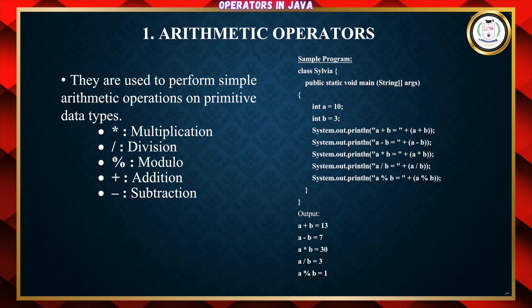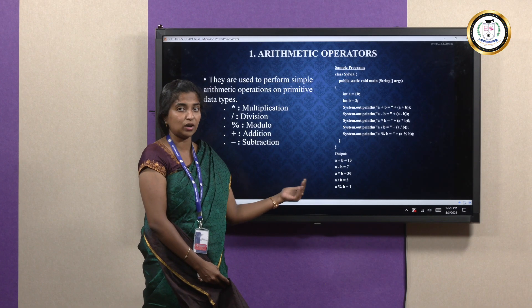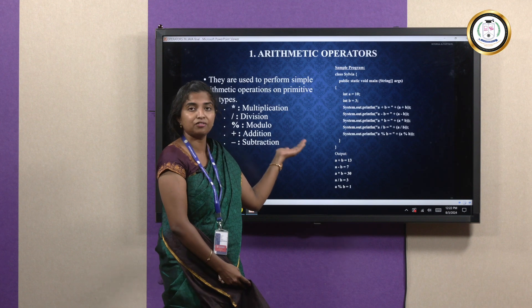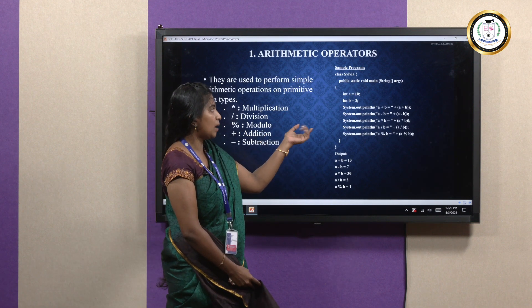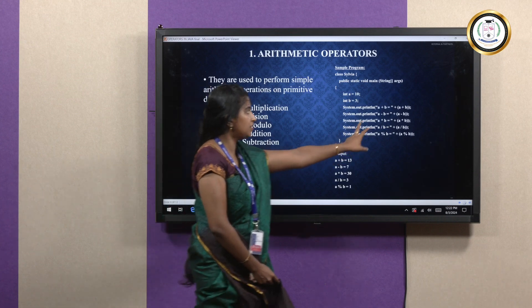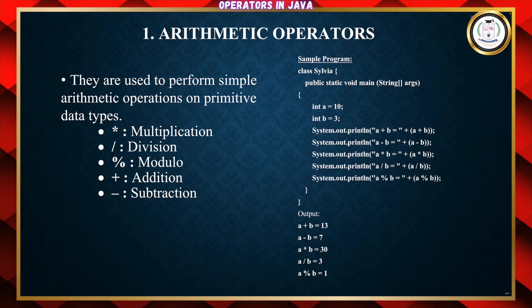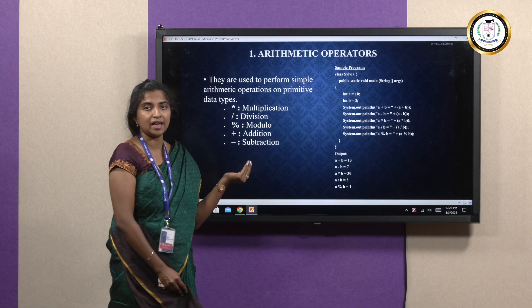Looking into this, this is my class and my class name is Sylvia. Public static void main. Int a is equal to 10 — I have declared as well as defined the value for a. I have declared and defined the value for b, which is 3. System.out.println — I am going to do the addition operation with a plus b. Similarly, for subtraction it is a minus b, multiplication is a into b, division is a divided by b, and for modulo it is a modulo b.